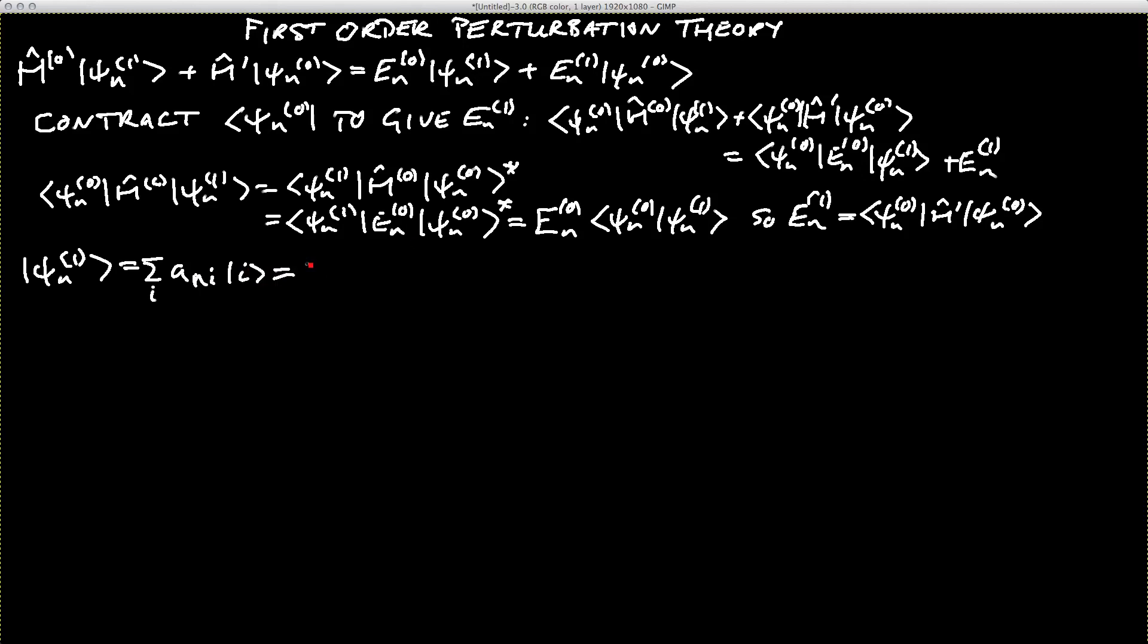But actually, we're going to use the basis set of the zeroth order wave functions, so the starting wave functions. So now we're going to write that as a sum over k of a. I'm going to put a bracket 1 up here to remind us that this is a first-order correction. This is going to be ank psi k of 0 ket. So we're expanding psi n of 1 in the zeroth order wave functions, which are a complete basis because they are the eigenstates of an observable, and we're writing the expansion coefficients as a, n, k.